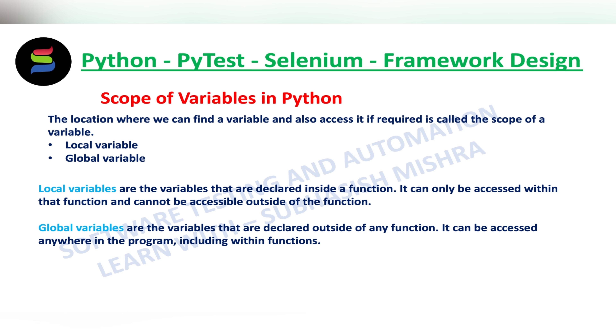Whereas global variables are the variables that are declared outside of any function. They can be accessed anywhere in the program, including within the functions.